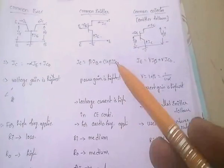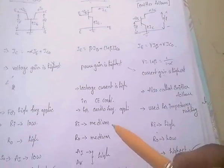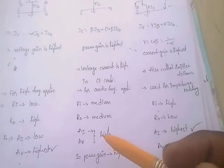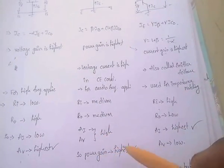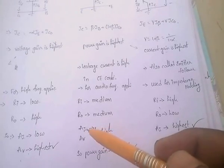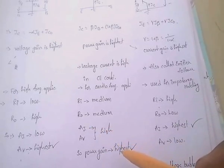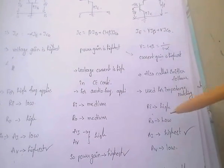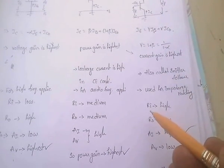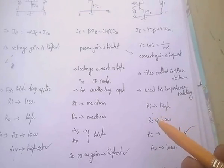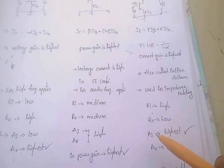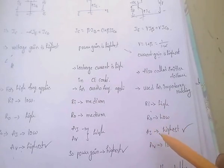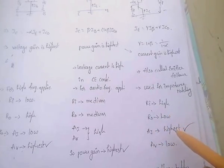In common emitter, both current gain and voltage gain are high, so power gain is highest — power gain equals voltage gain multiplied by current gain. In common collector, since input impedance is high and output impedance is low, voltage gain is low but current gain is highest.